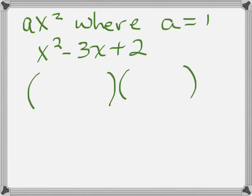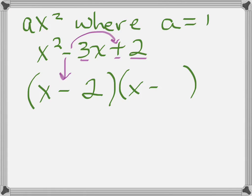We're going to factor into two binomials, and we have x times x. We bring down our first term, which is a minus, and just like previously, a negative times a positive gives a negative. So this time we're going to have subtraction in both binomials. Then we ask ourselves: what two numbers multiply to give 2 that when added give 3? The operation on the constant tells you whether you're adding or subtracting — in this case we're adding. Multiply to get 2, add to get 3: that's 2 and 1.